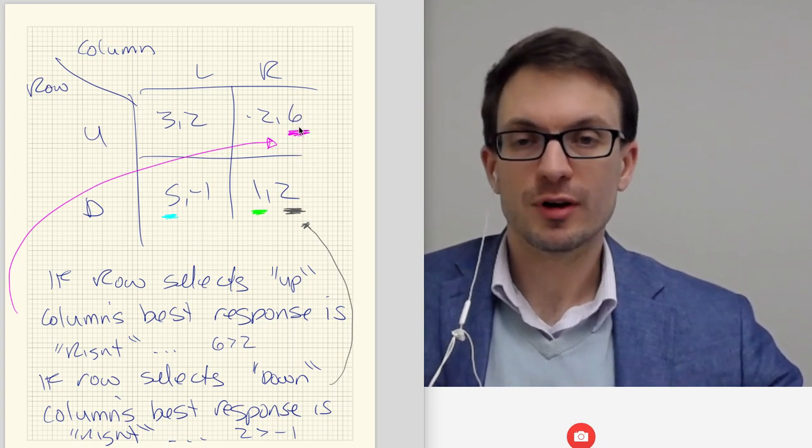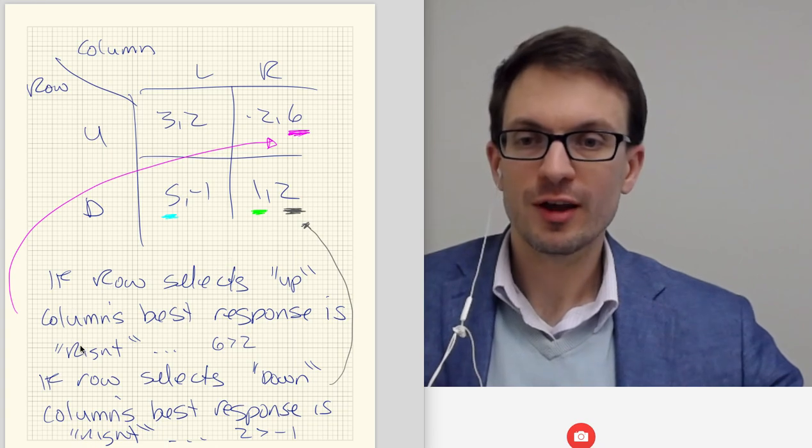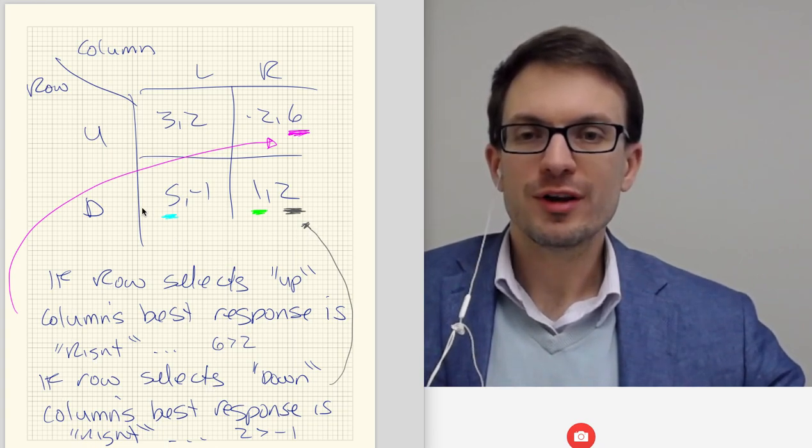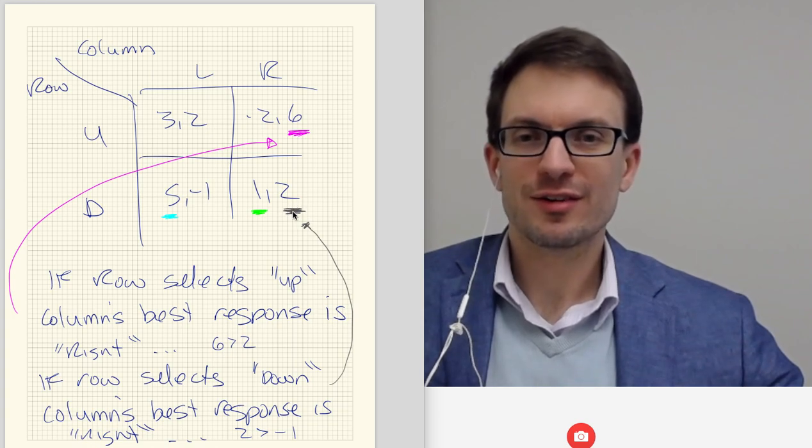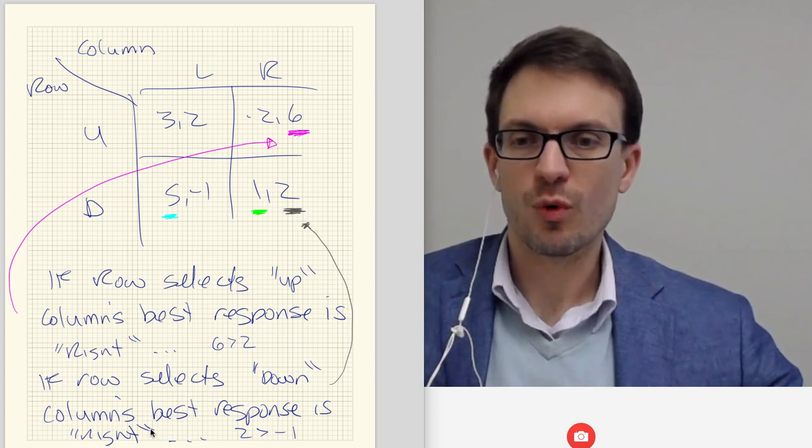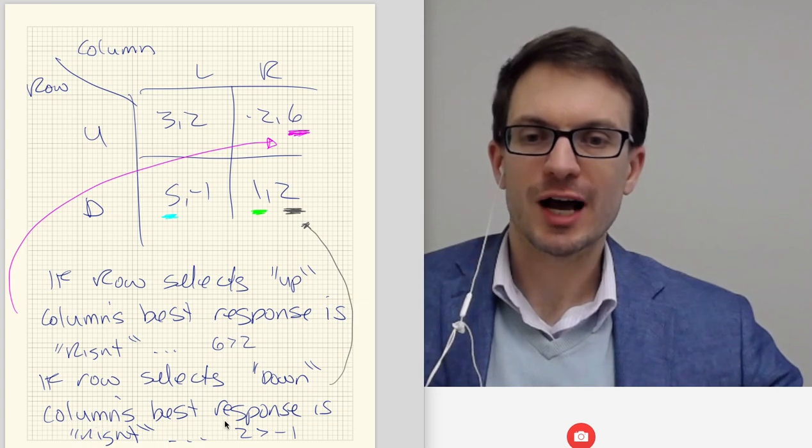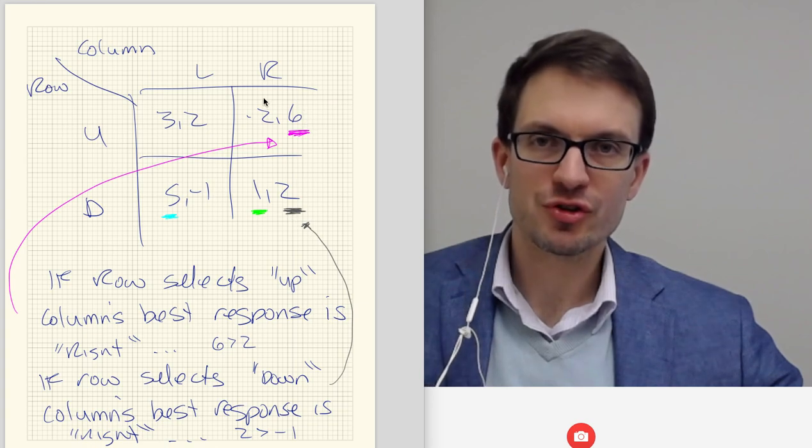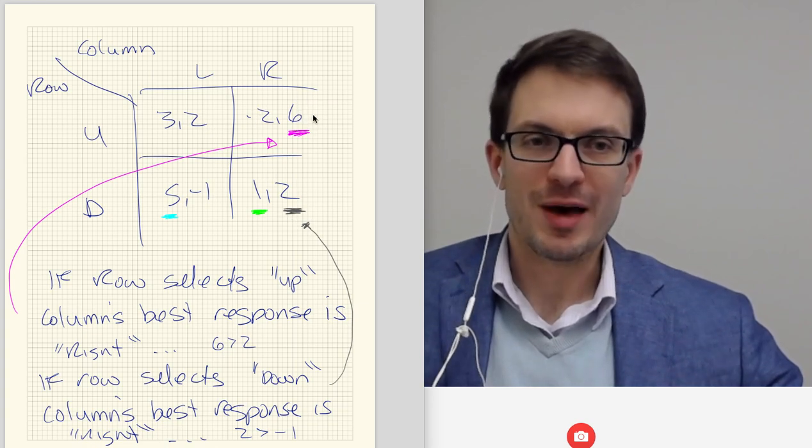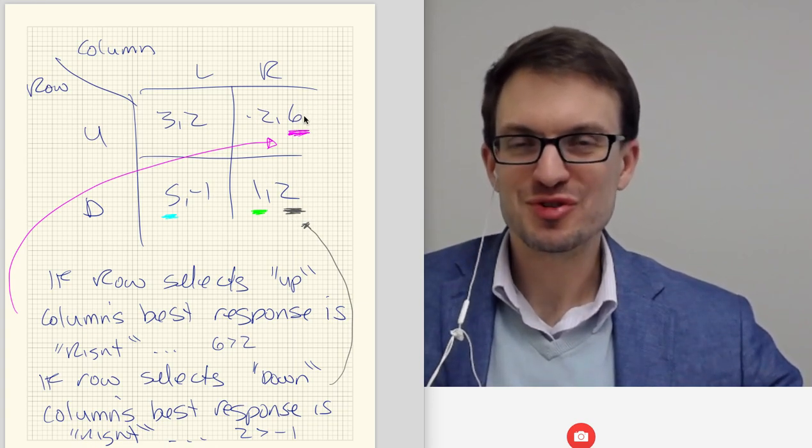The strategy, the payoff of 6 results conditional on those mutual choices. If row selects down, what does column want to do? Well, column still wants to choose right because 2 is bigger than minus 1. If row selects down, column's best response is right, and so I'll underline 2. And we see actually column has a dominant strategy here too because it doesn't matter what row does. Column always wants to choose right.